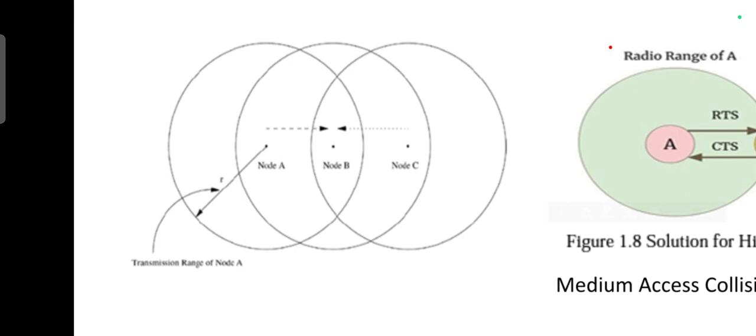Node A is from a particular direct transmission range and node C is within a different direct transmission range. Node C will be unaware of the presence of node A and node A will not even know the presence of node C. These two nodes are unaware of each other's presence.